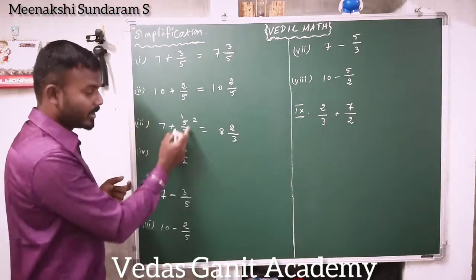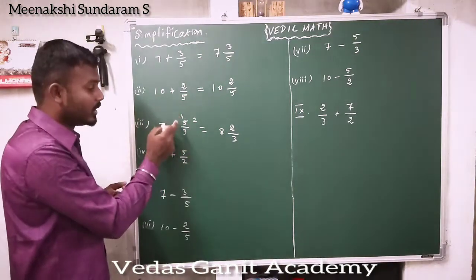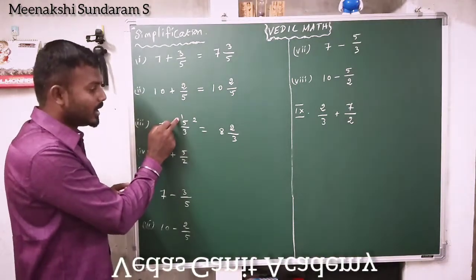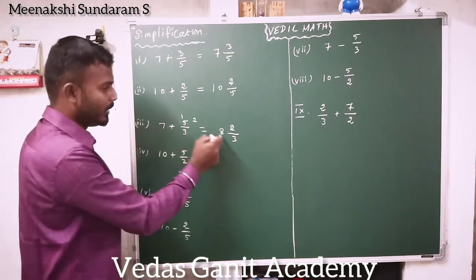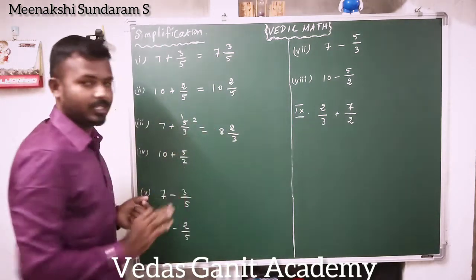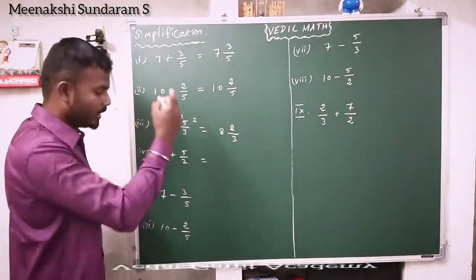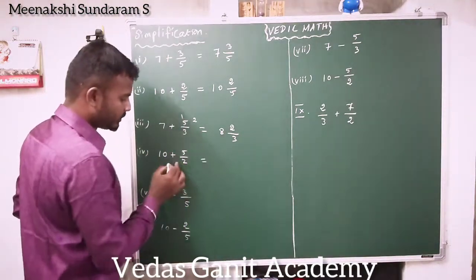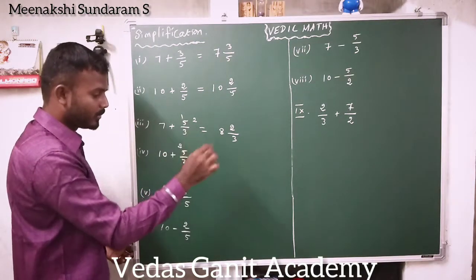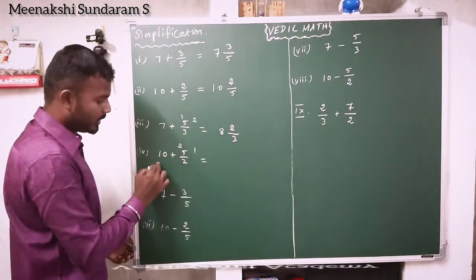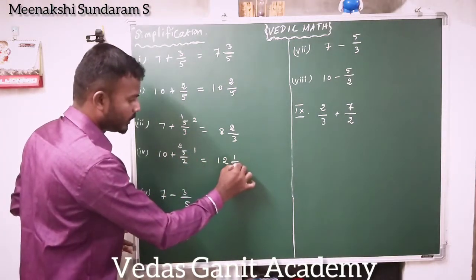When they are given an improper fraction, you just find it. How many 3s are there in 5? Only one 3, remaining 2. So you add 1 plus 7, it became 8. Then write the remainder 2 by 3. Similarly, Example 4: 10 plus 5 by 2. Here also it is an improper fraction. How many 2s are there in 5? 2 times. Remaining 1. So you add 10 plus 2, that is 12, and write 1 by 2 remaining. Answer: 12 and 1 by 2.